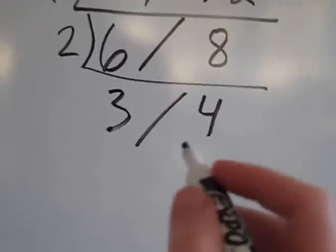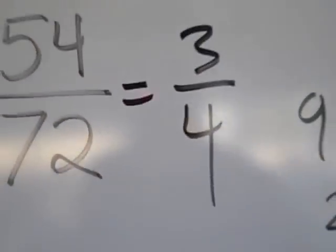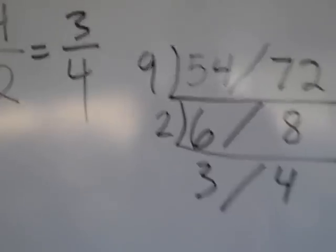So 3 and 4 don't have any common factors other than 1, so therefore this is actually 3/4. 3/4 is the simplest form.